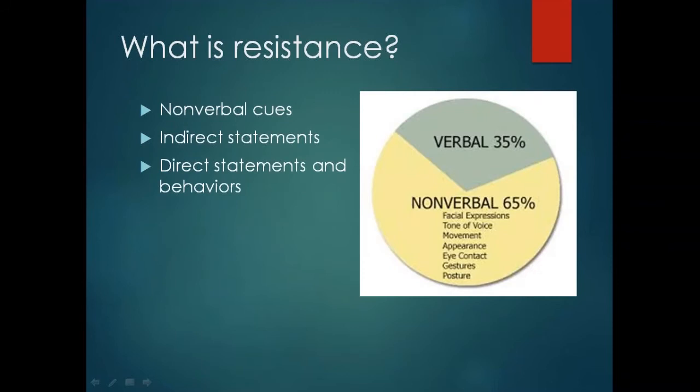Client resistance can come in many forms at all times during the therapeutic process. It could be in nonverbal cues, indirect statements, or direct statements and behaviors. As you can see in the pie chart, verbal resistance is about 35%, while nonverbal cues make up the majority at 65% — including facial expressions, tone of voice, movement, overall attitude, eye contact, gestures, and posture.